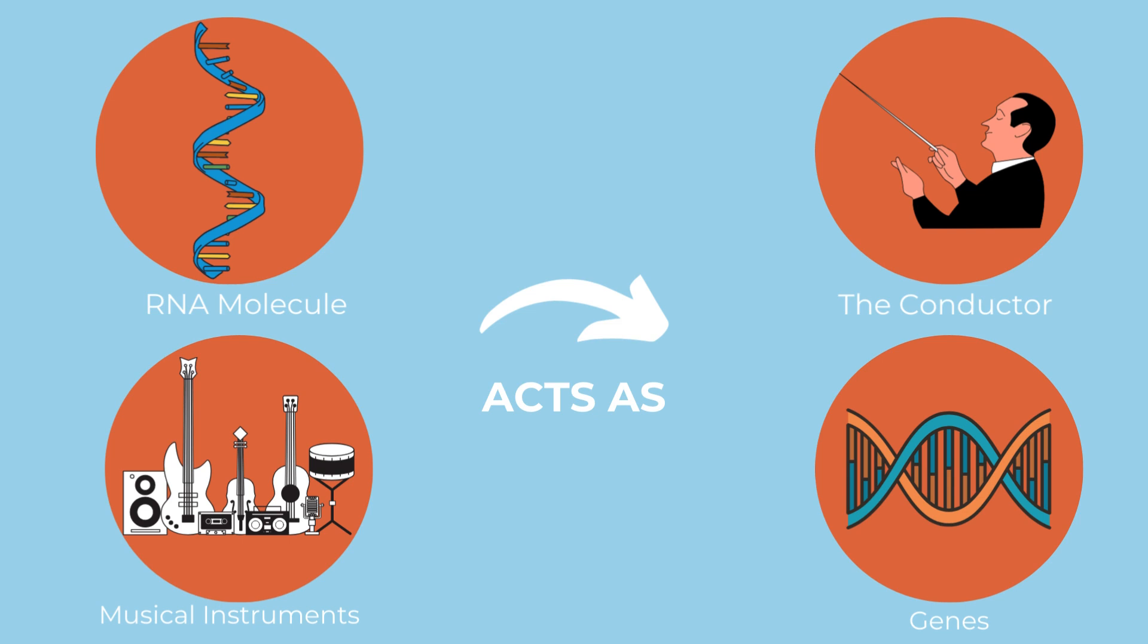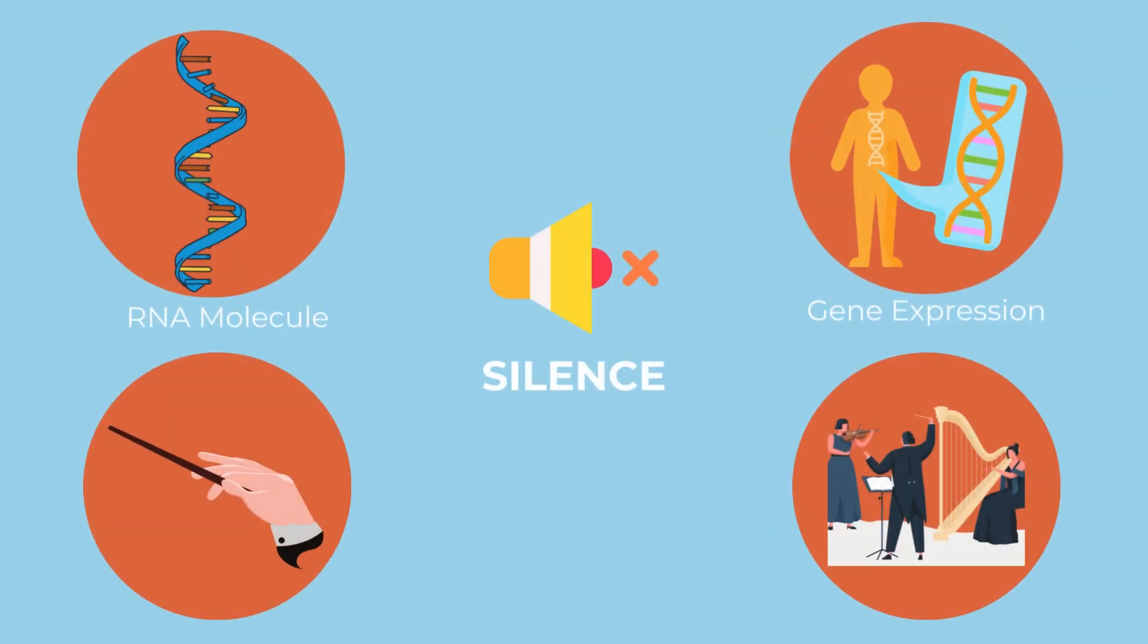When RNA interference happens, the RNA silences certain genes in order to stop their expression, like a conductor will silence instruments in the orchestra with the wave of a hand.